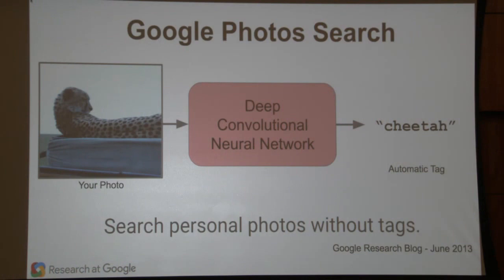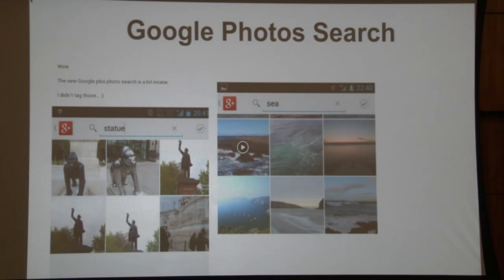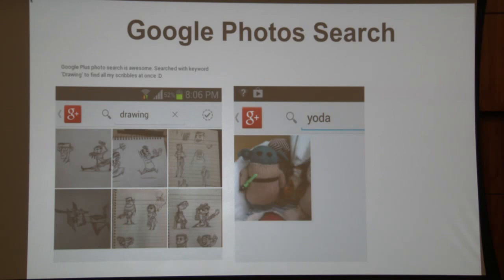We've deployed this — I actually get to use my vacation photos; we had a cheetah jump on our car once, which was exciting. We now allow people to search their photos without tagging them at all — we detect what kinds of objects are in the uploaded photos and allow you to search. So I can type 'cheetah' and find my cheetah picture. Real users are posting things like: 'Wow, the new Google Plus photo search is a bit insane. I didn't tag those.' Someone searched for 'statue' and got their statue pictures.